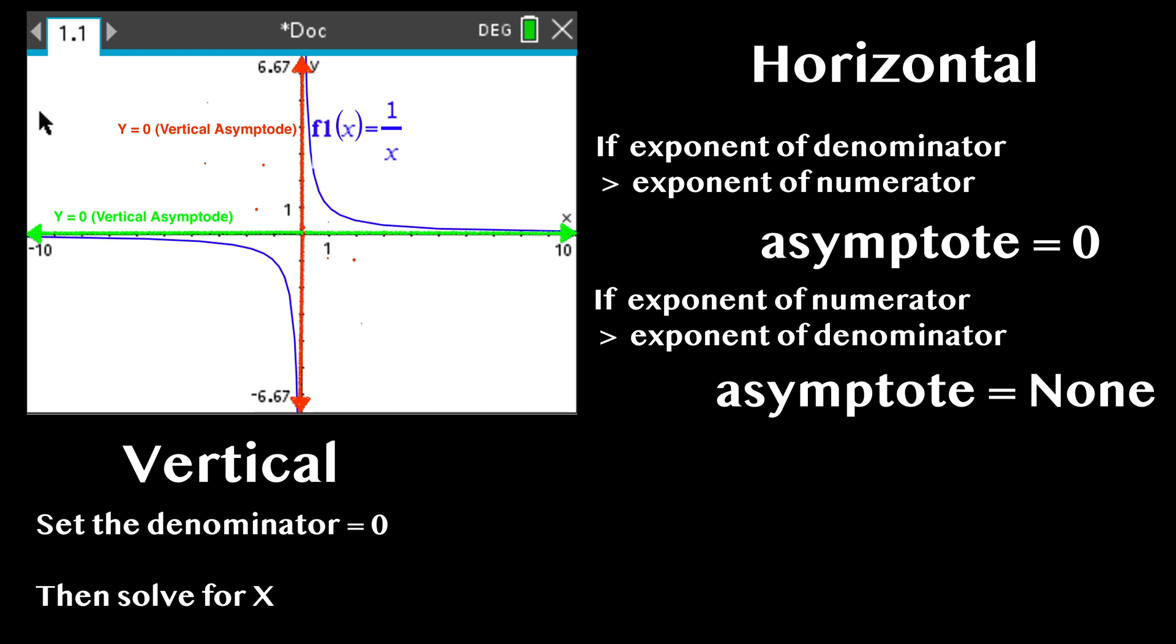To find the vertical asymptote of a rational function, simply set the denominator equal to 0 and solve for x. We must set the denominator equal to 0, and in this case, what we solve is x equals 0. So that is our asymptote.